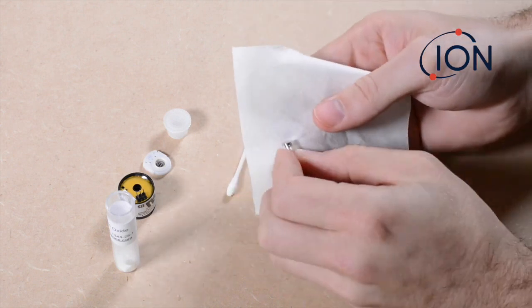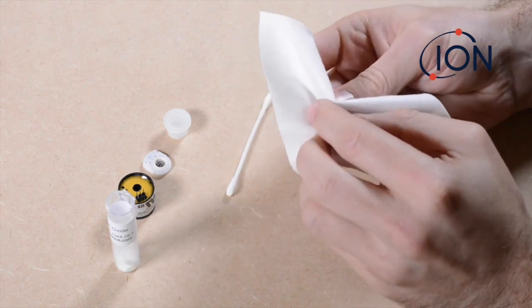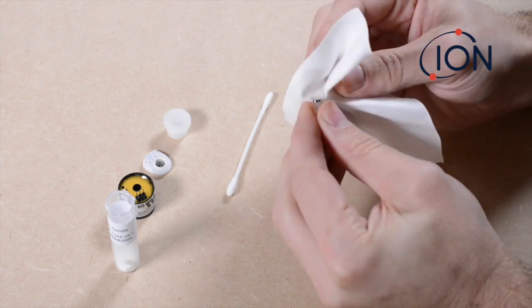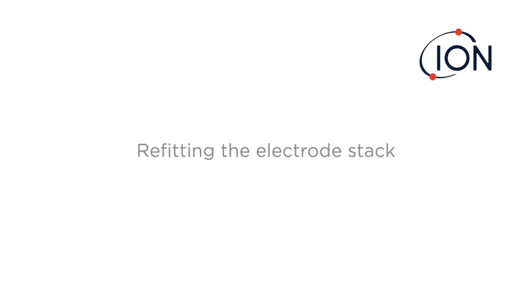Once you can hear a light squeaking sound, this is an indication that the lamp window is clean. Any excess powder on the lamp window can be removed either using a lint-free cloth or by blowing clean, dry, and oil-free air across the lamp.